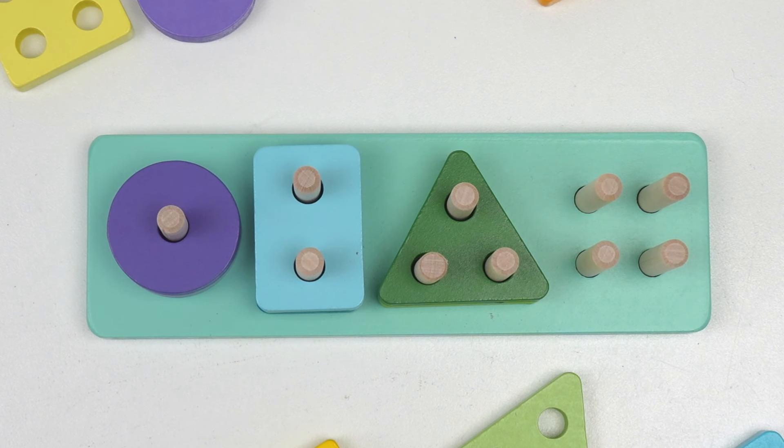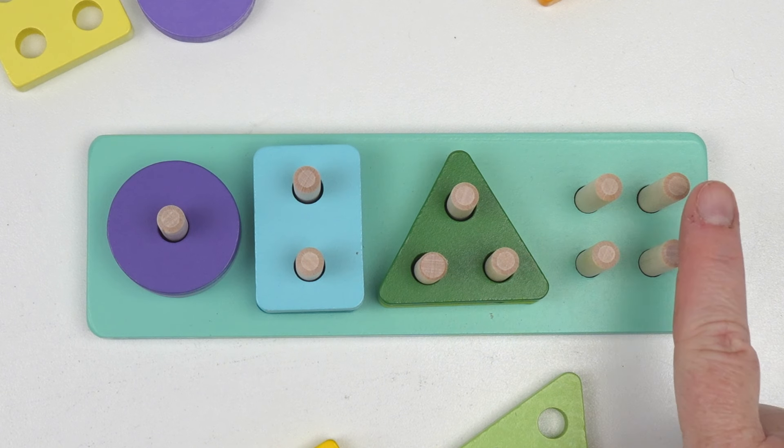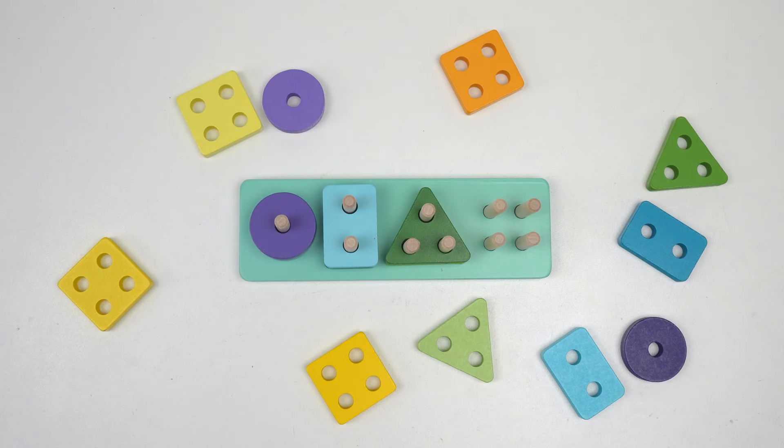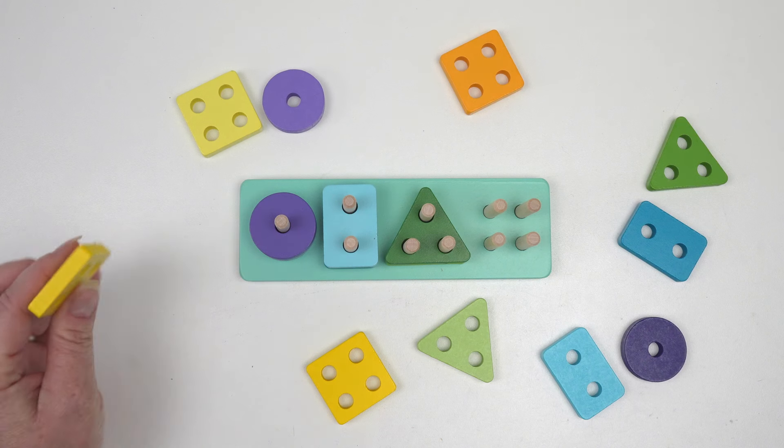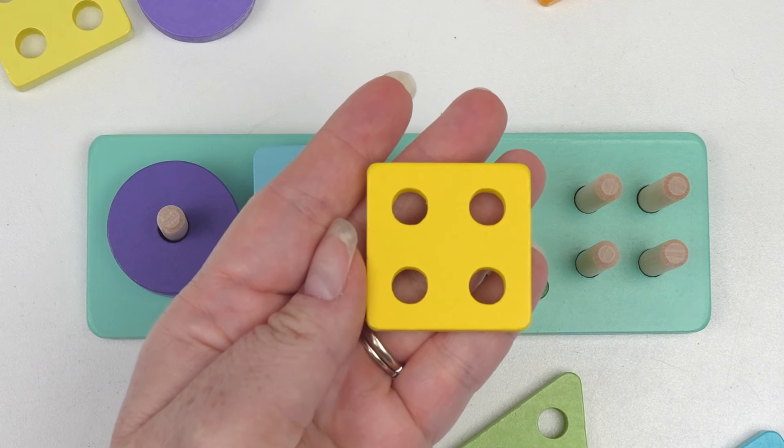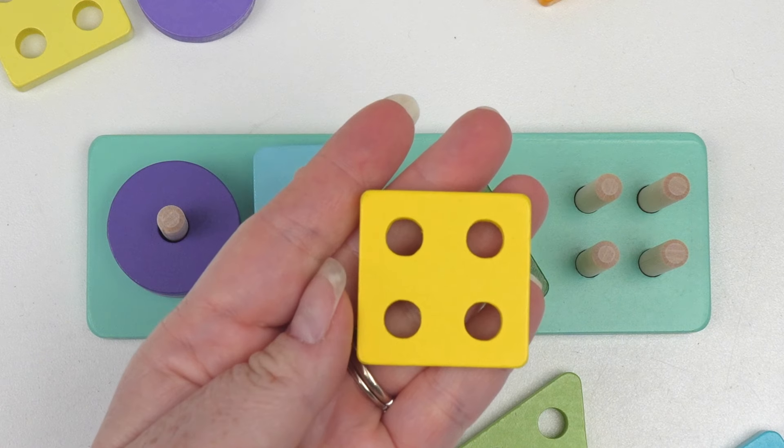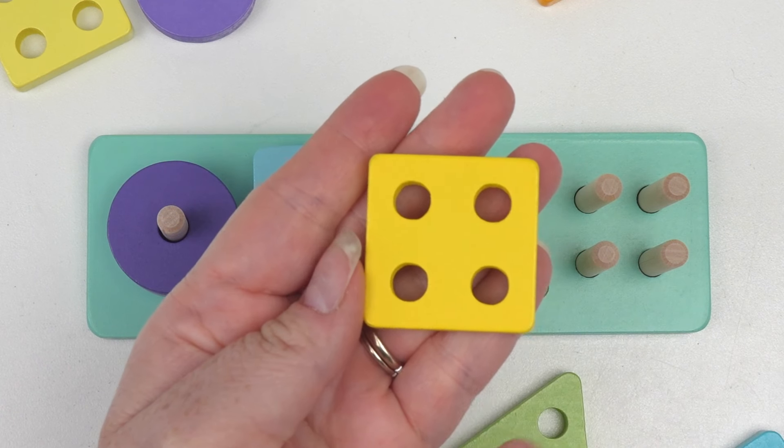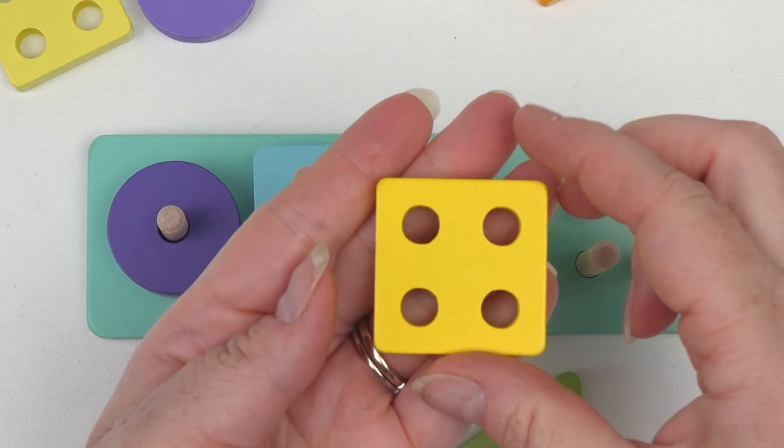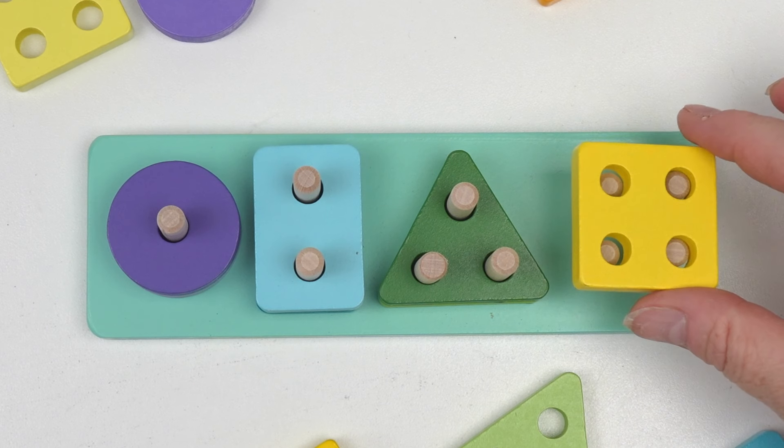And our last set has one, two, three, four pegs. We already know that this shape had four holes. This is called a square. And it has one, two, three, four sides that are all the same length.